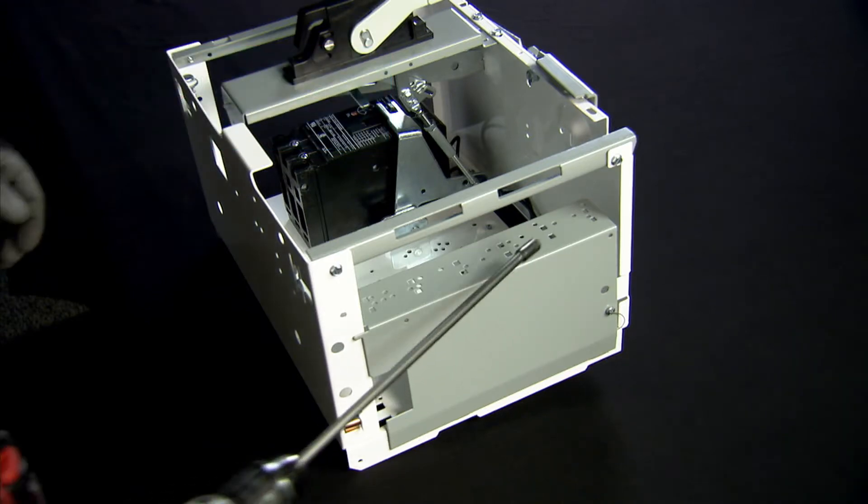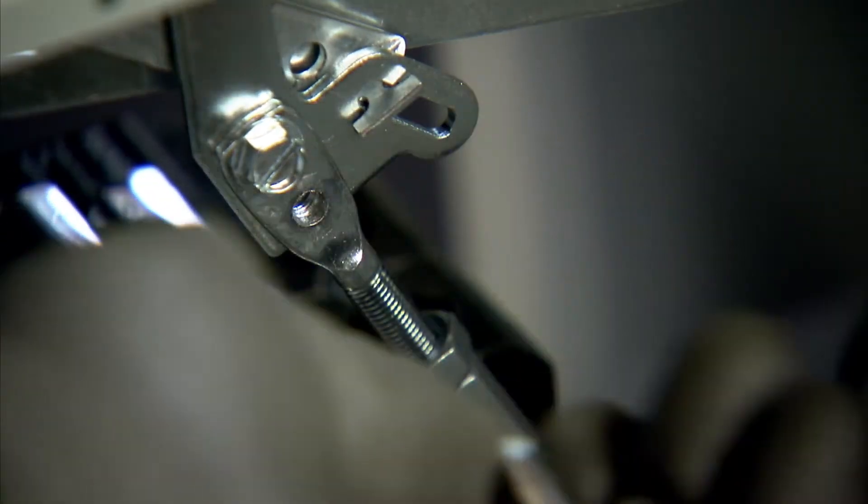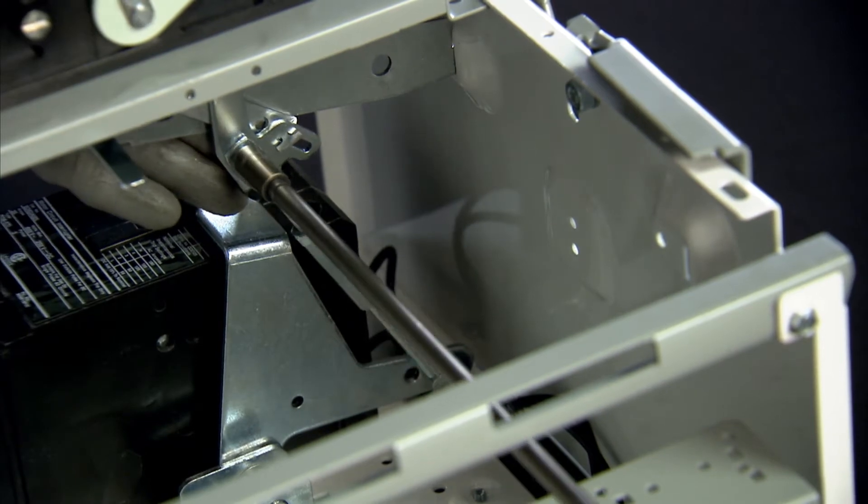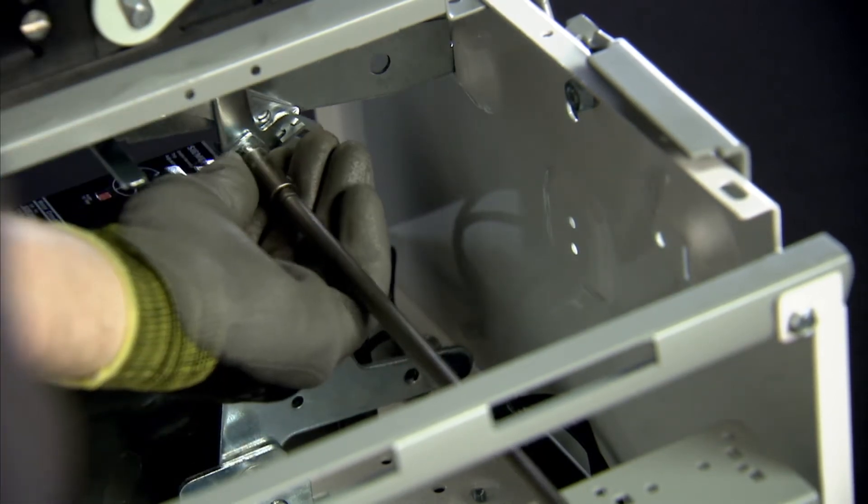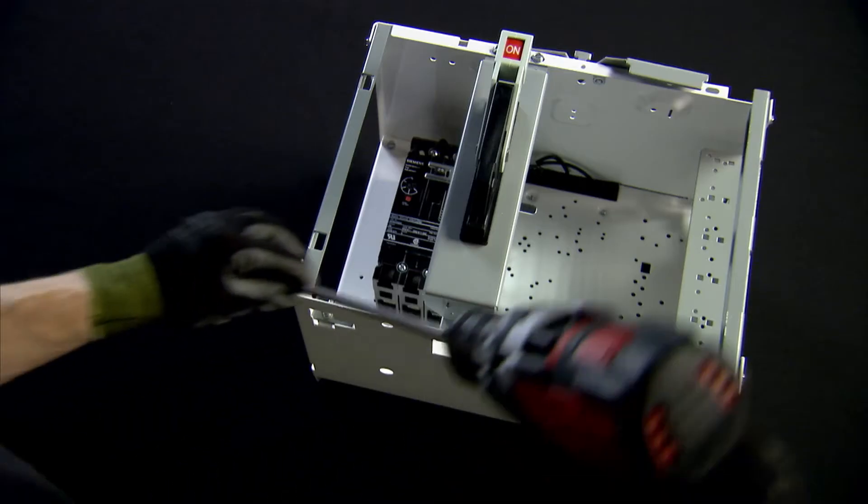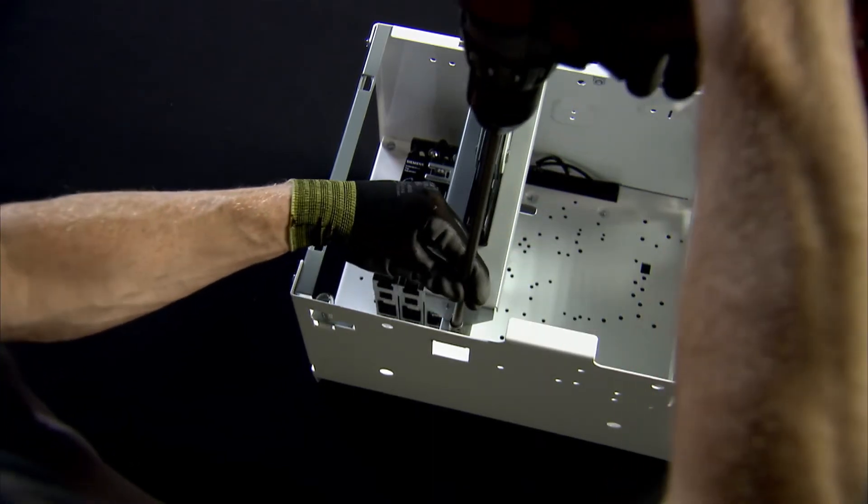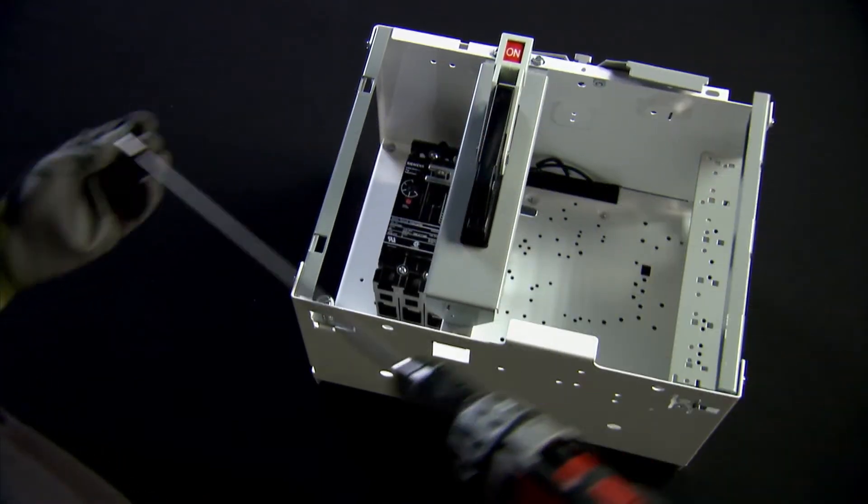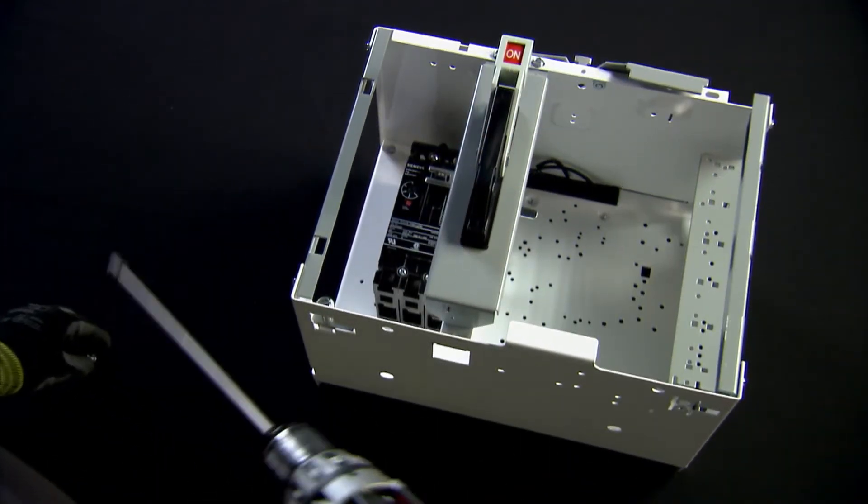To begin, remove the two screws attaching the linkage assembly to the handle assembly. Next, remove the handle assembly from the unit top plate and handle bracket. Do this by removing the three screws holding the handle assembly in place.